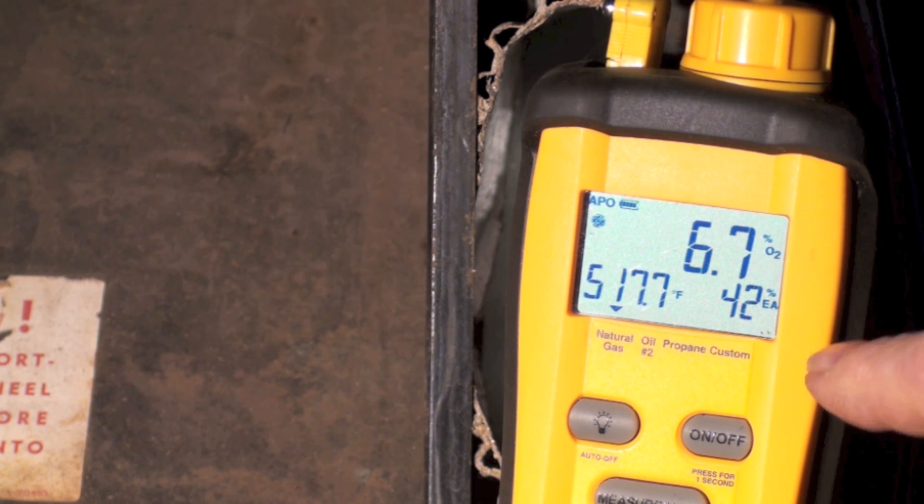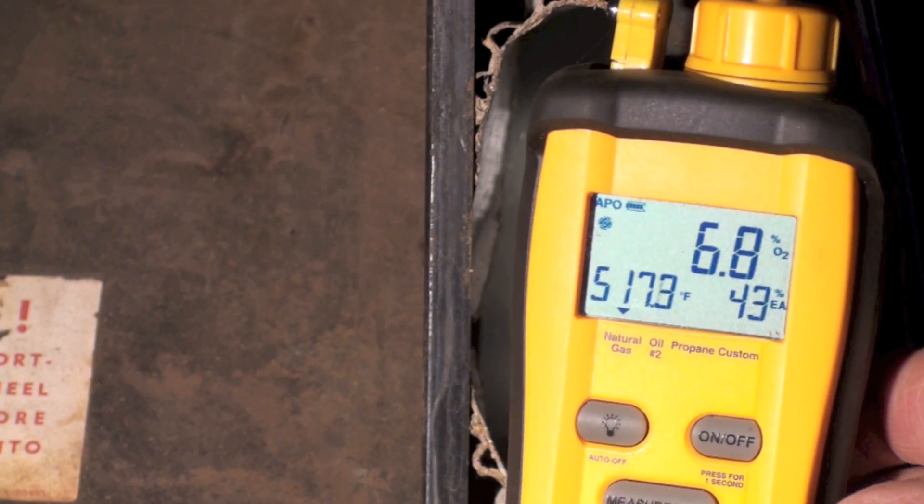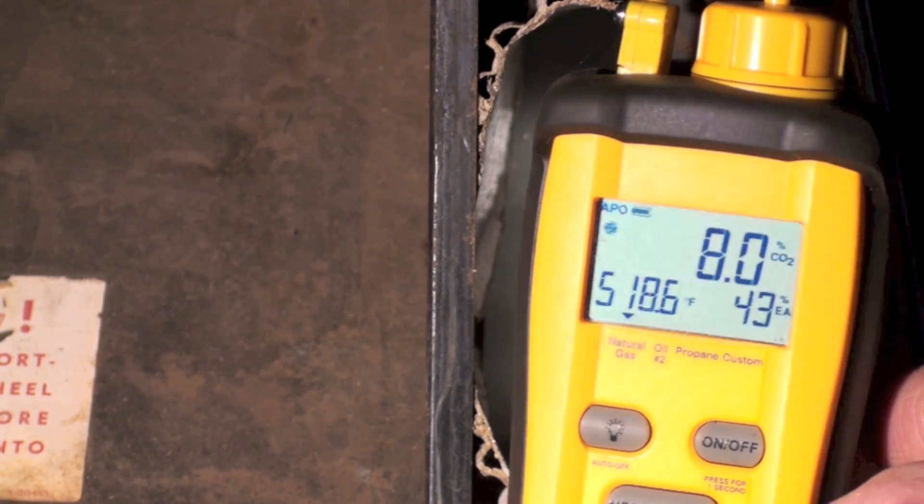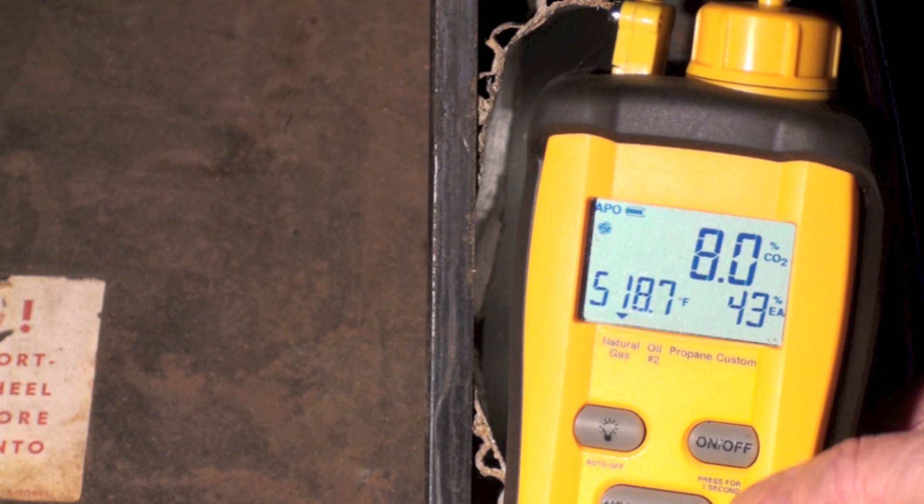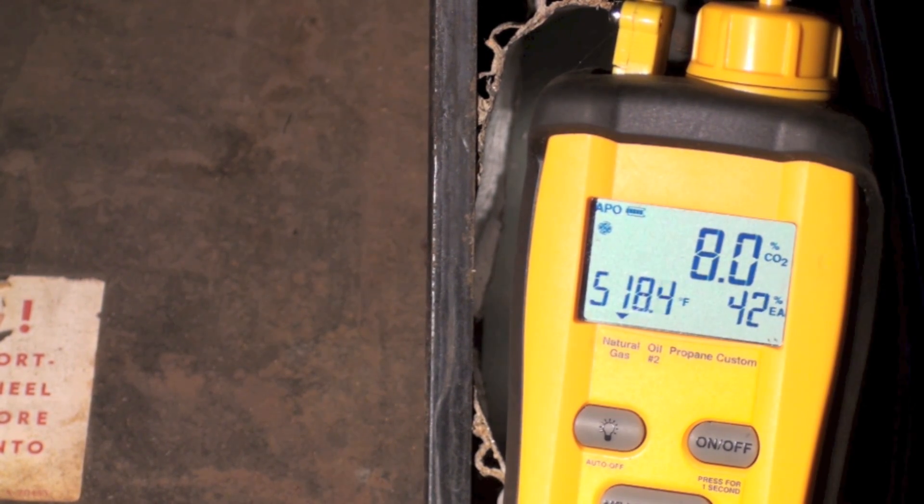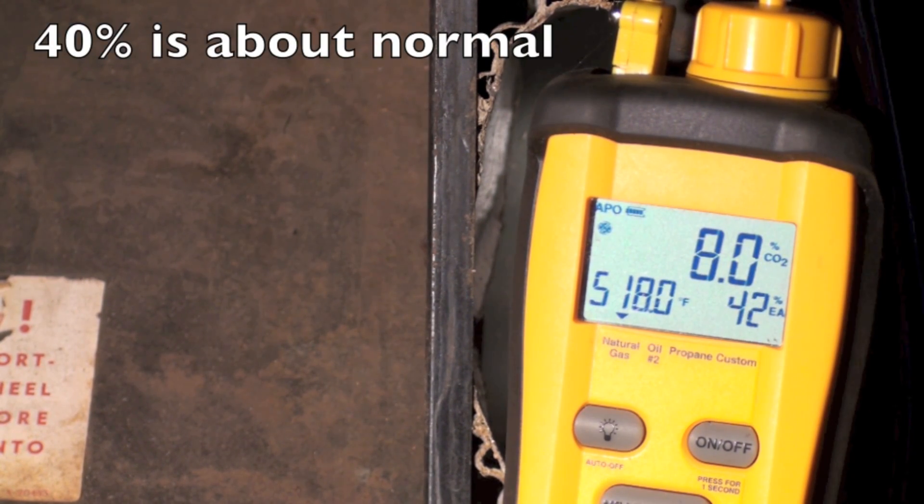Okay, go again over O2 - 6.8, CO2 - 8. Excess air is running in the low 40s. Actually, that's more like what they recommend for excess air, is in the 40s.